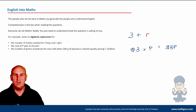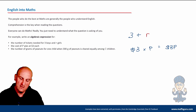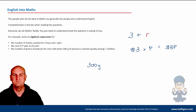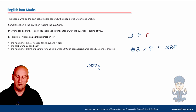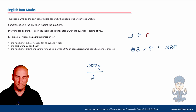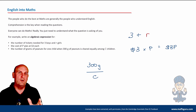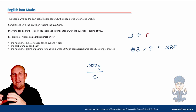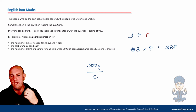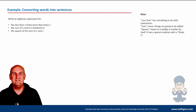The number of grams of peanuts for one child when 300 grams is shared among C children. If I had one child, they'd get 300 grams. Two children? 300 divided by 2, which is 150 grams. Three children? 300 divided by 3. But I've got C children, so what we've worked out is I'd be dividing: 300 divided by C. Think about using numbers first, then when you've worked out the operation, put in those letters.